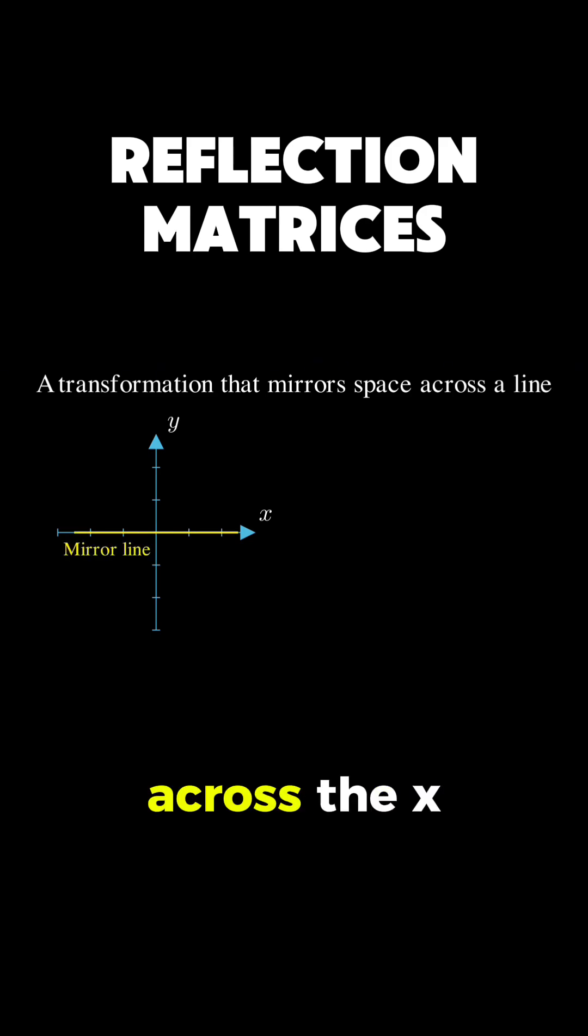If we reflect across the x-axis, any point above the line gets mapped to a corresponding point below the line at the same distance, and the perpendicular distance from the point to the mirror line is preserved.